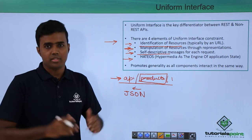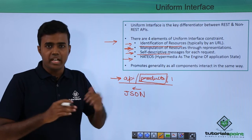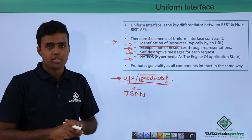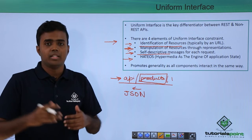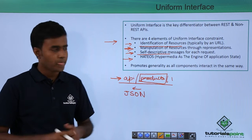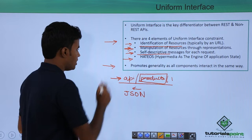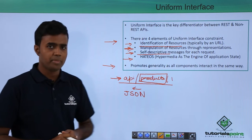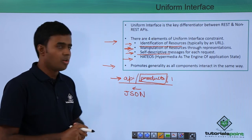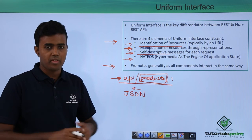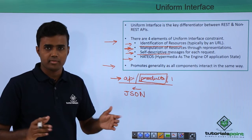The fourth element is HATEOAS — Hypermedia as the Engine of Application State — which basically means you need to include links in each response so that the client can discover other resources very easily. The advantage of the uniform interface constraint is that it promotes generality, as all components — whether mobile phones or laptops — interact in the same way.